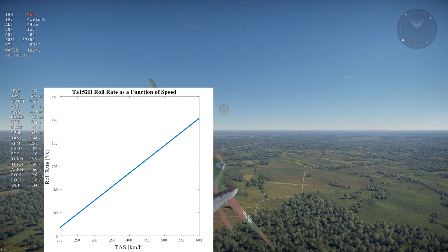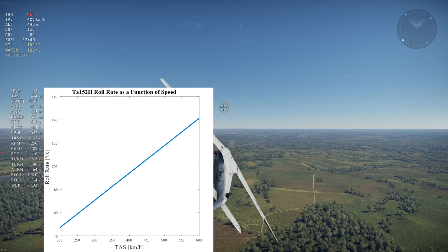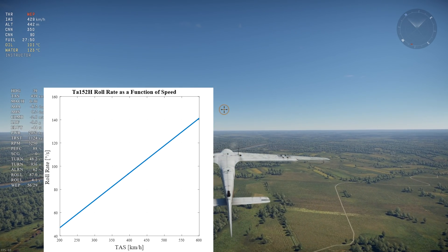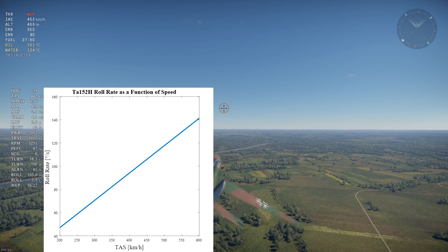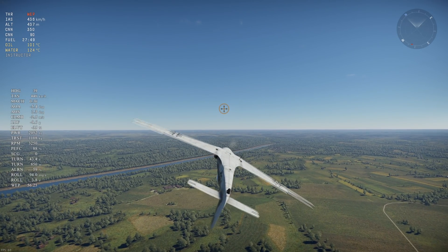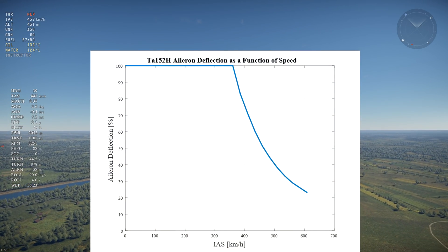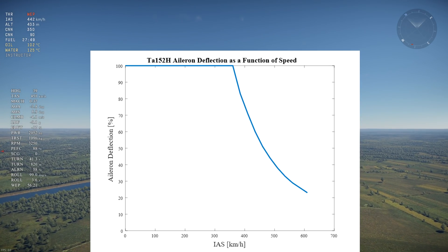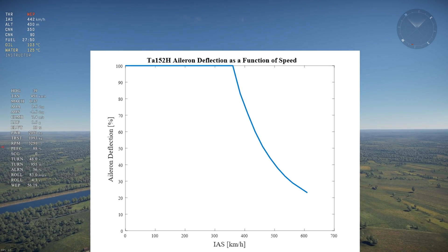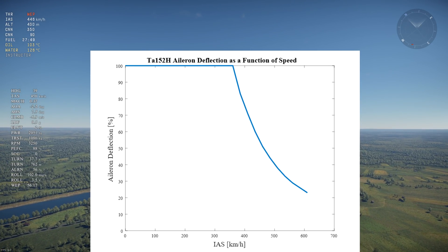However, to simulate control stiffening at high speed, aircraft cannot fully deflect their control surfaces past a certain indicated airspeed. For the Typhoon it can fully deflect its ailerons until 360 kph IAS, but beyond that speed the ailerons can no longer deflect fully which reduces roll rate.